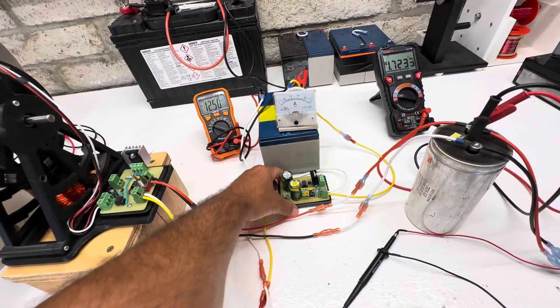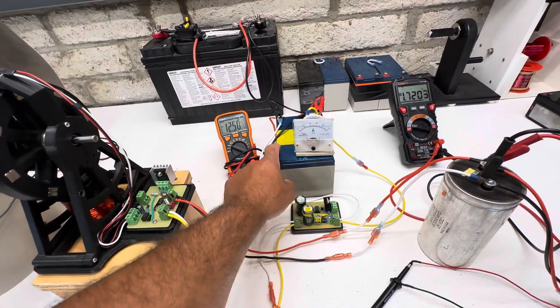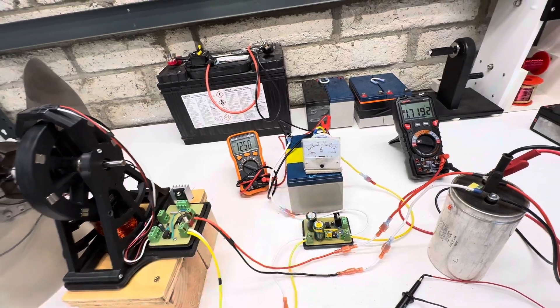We go into this cap dump, so this will be triggering right around 16.5 to 17 volts and then dumping into this battery to charge this battery.